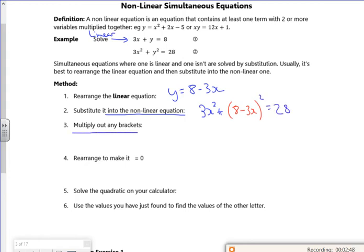Multiply out the brackets. So 8 squared is 64. 8 times 3 is minus 24. Double it minus 48. Square that is plus 9x squared. Be careful with that. Some of the outputs minus.